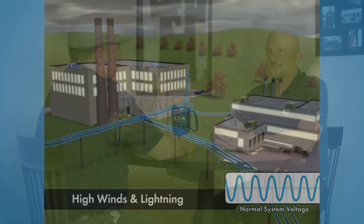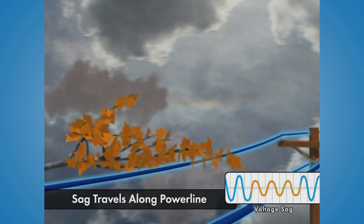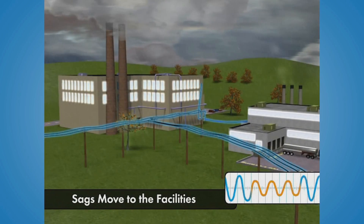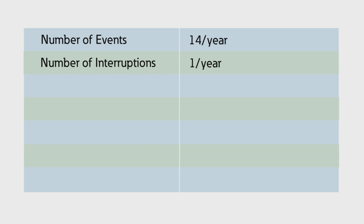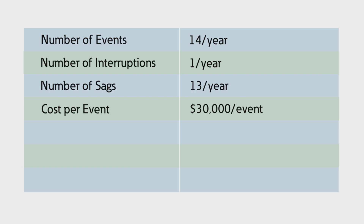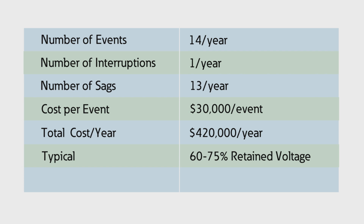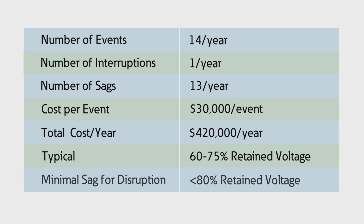Why are sags considered the most costly PQ event? Basically because they generally affect a majority of your facility or process. A 7x24 plastics plant was very diligent about monitoring their power system and had identified that over the past five years they averaged 14 deep voltage sags that caused disruption. Only one of the 14 on average was a full interruption. They identified losses of $30,000 per event as a result of seized equipment and the associated cleanup. The 13 sags had a typical range of 60 to 75% retained voltage, and a sag over 80% retained voltage wouldn't disrupt their process.